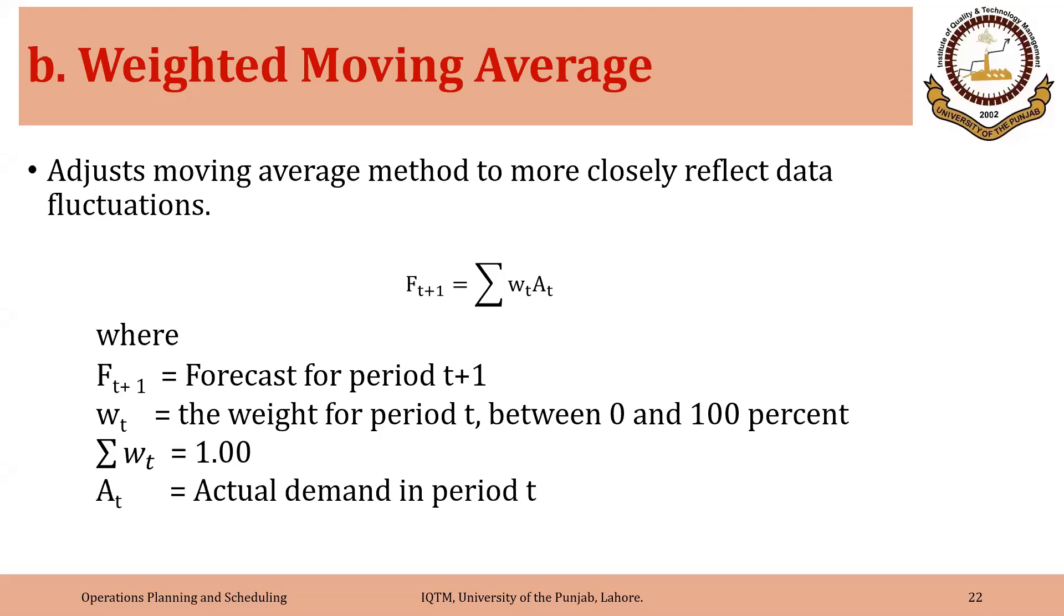In simple moving average, you might have noticed that we assigned equal weight to every period that we used. For example, in n equals 2, we assigned a weightage of 1 over 2 or 50% to each month. Once we used n equals 5, we assigned a weightage of 1 over 5 or 20% to each of the period.